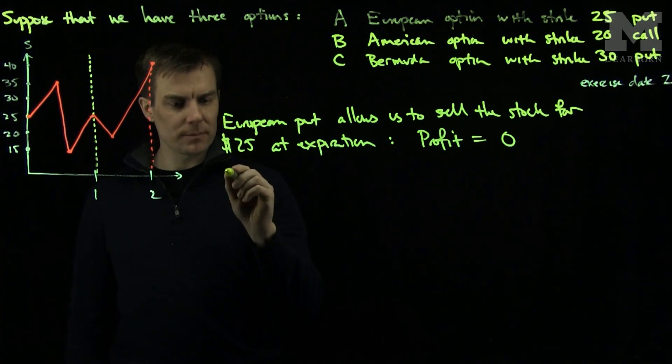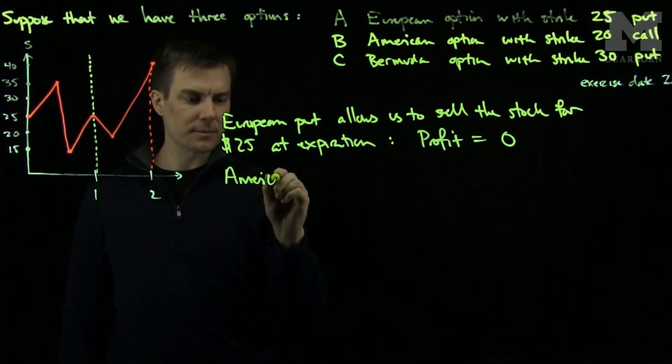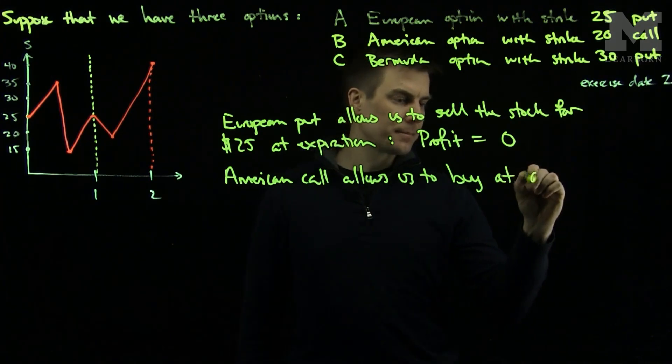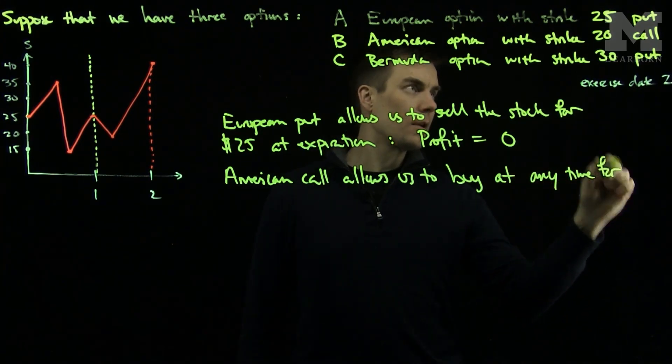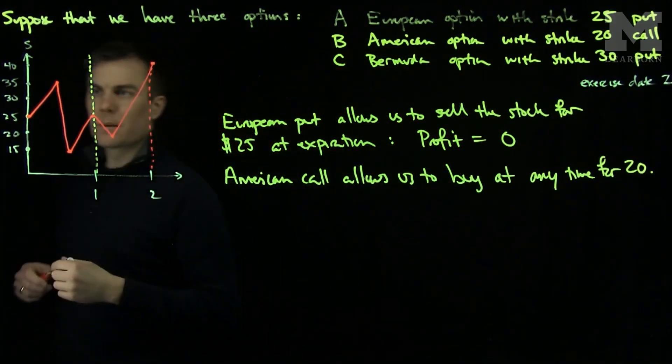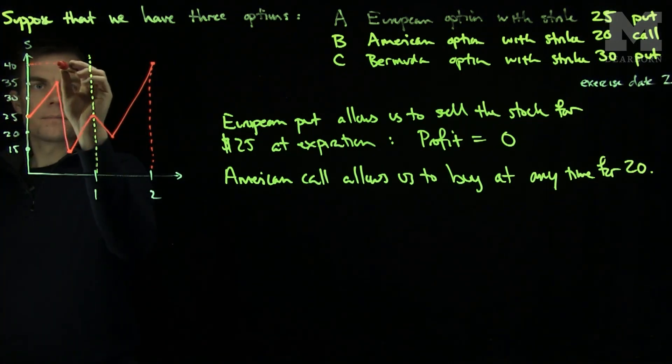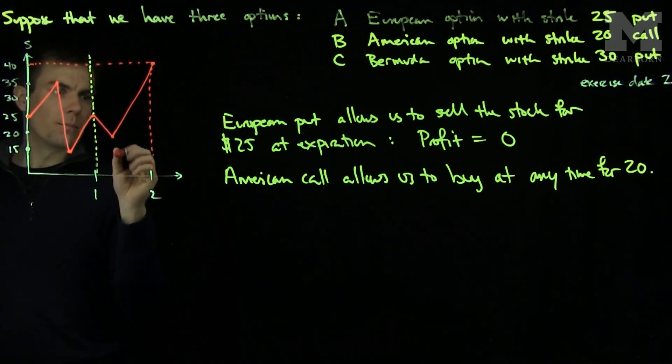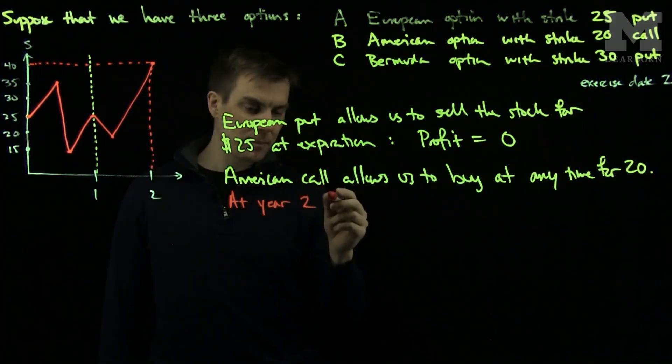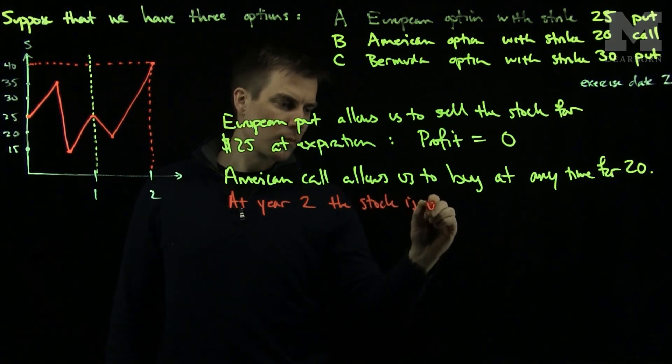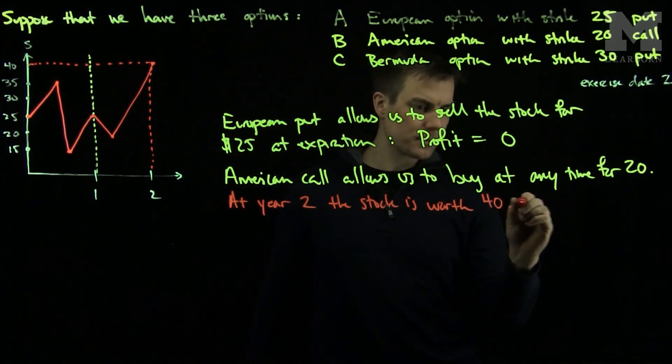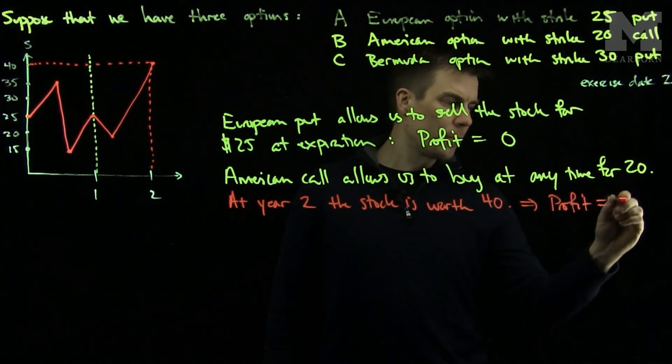If we consider now the American option, the American call allows us to buy at any time for 20. If we look at our graph, I would like to buy the stock at the final time of year two. At expiration of the option, the stock is worth 40 and we can buy it for 20. So our profit in this case will be 20.